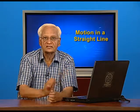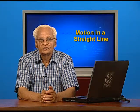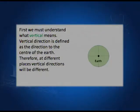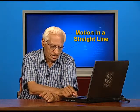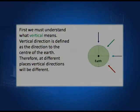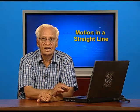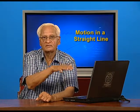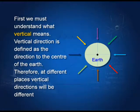When we consider vertical direction, the first thing is to understand what is vertical. Many students are not able to answer this question. Vertical direction is the direction towards the center of the earth, and it can be different at different places. The horizontal direction is the direction along the surface of the earth, or perpendicular to the vertical direction. We define vertical direction first, and then the horizontal direction.